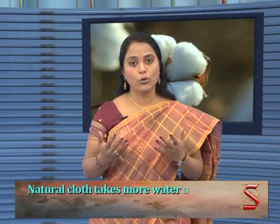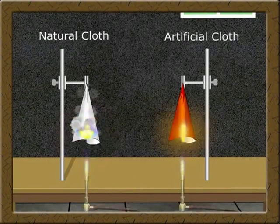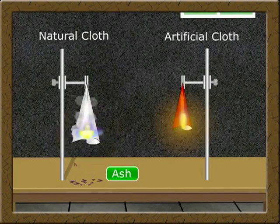We can conclude that natural cloth takes more water and artificial cloth takes less water. If you burn natural cloth, it turns into ash. When artificial cloth burns, it shrinks, giving out a smell similar to that of burning plastic. Natural clothes are thick in appearance, whereas artificial clothes are thin, and you can observe this difference with a magnifying glass.